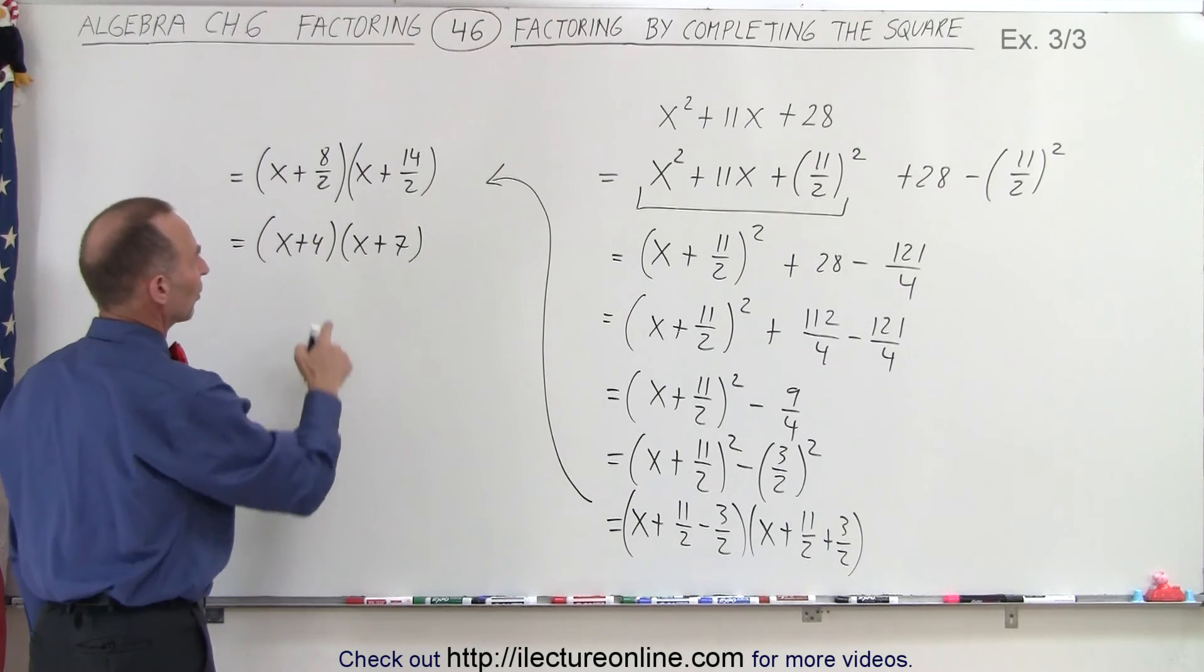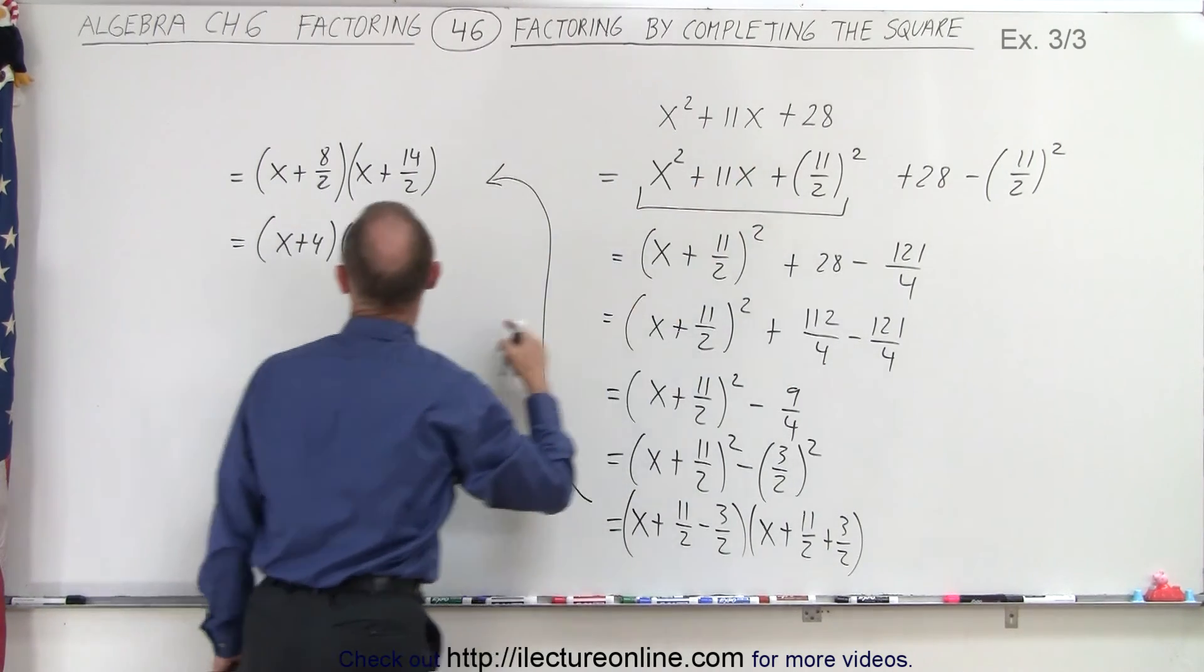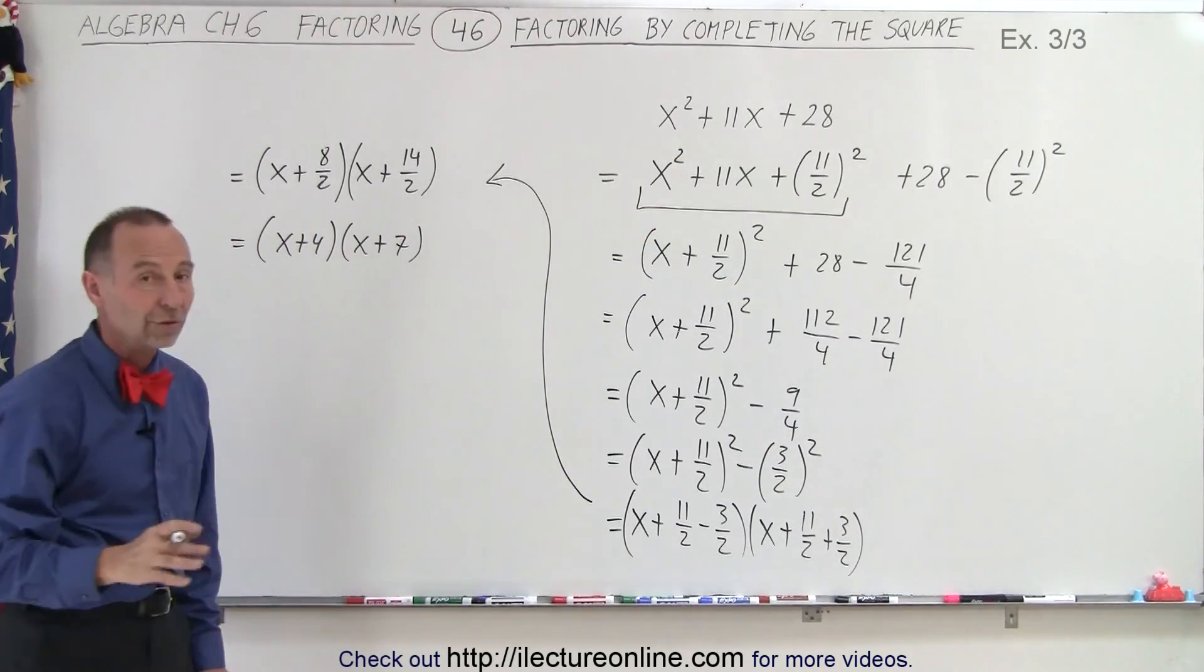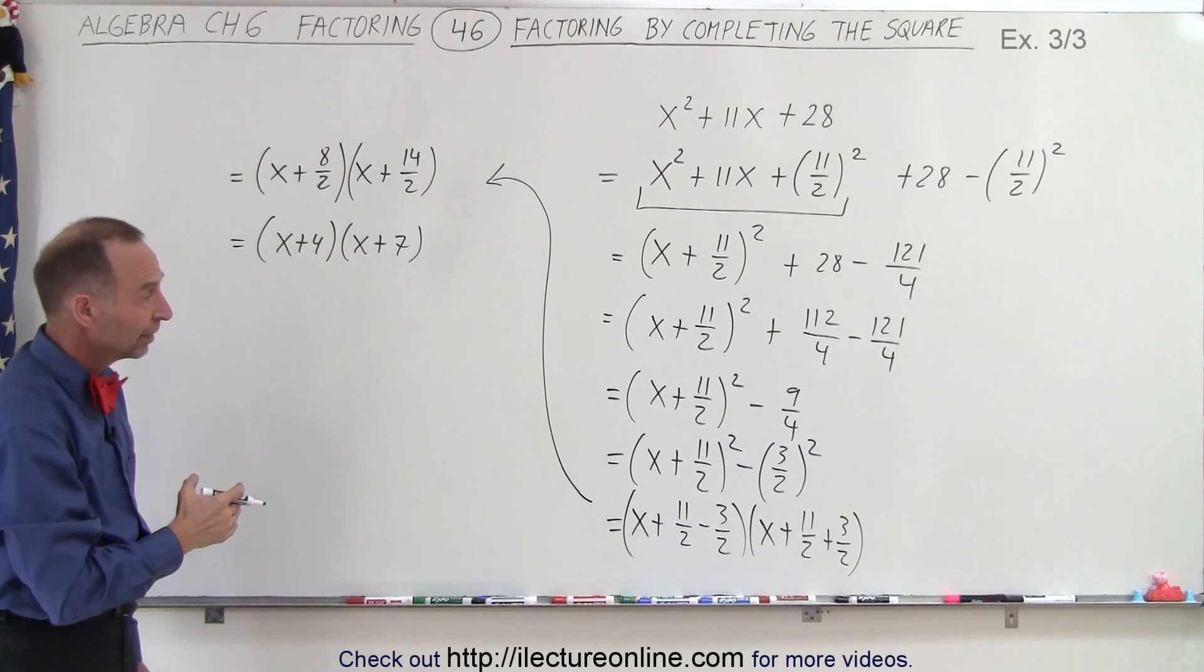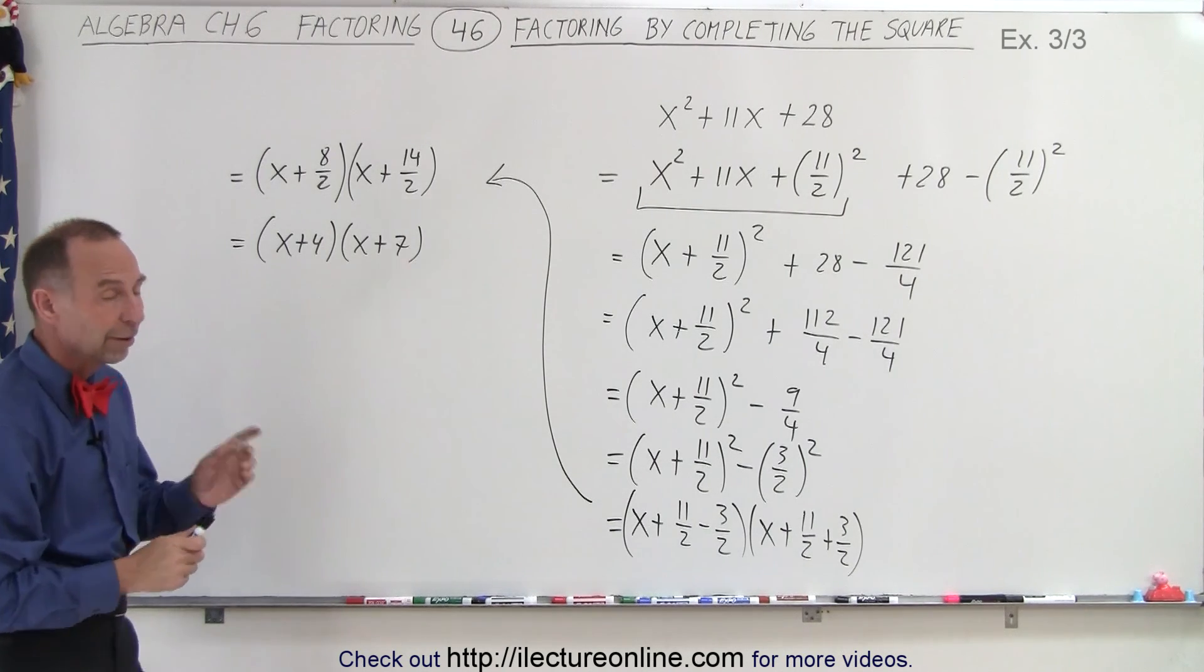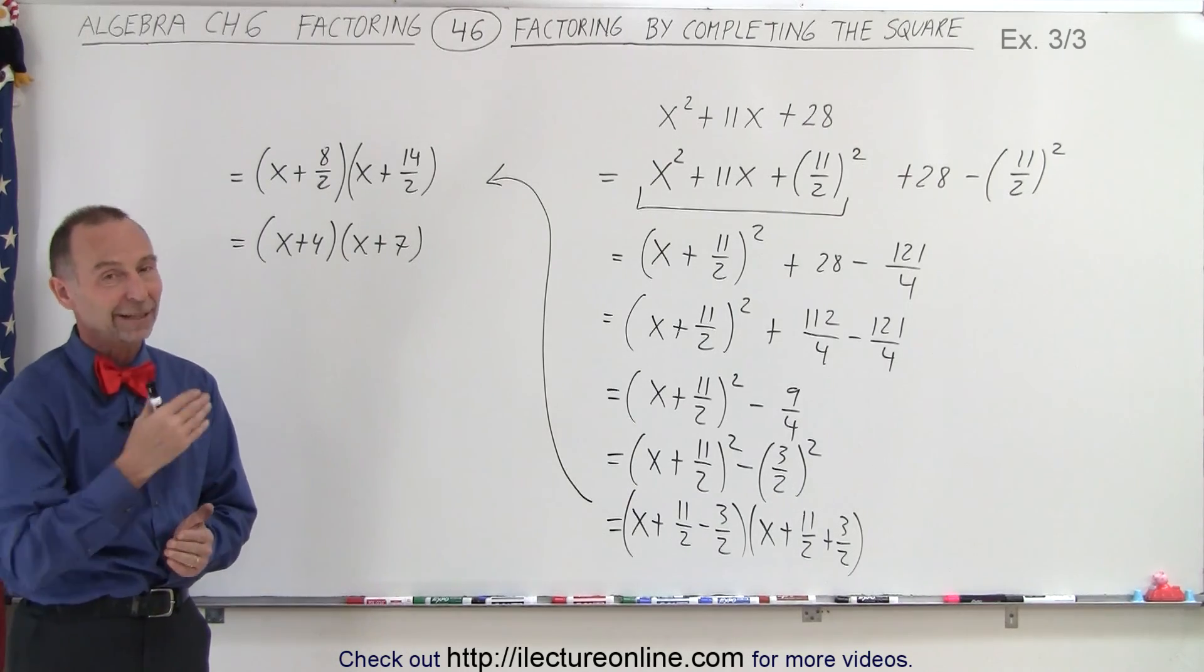And then quickly, if you want to see if you got the right result, 4 times 7 does indeed give you 28. And 4 plus 7 does indeed give you 11. So it looks like we did get the right answer in a roundabout way using the completion of the square method. But it did work and we got the right result. And that is how it's done.